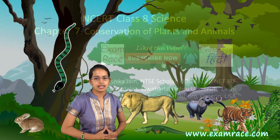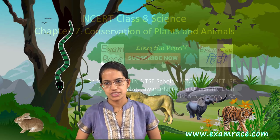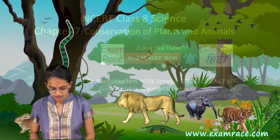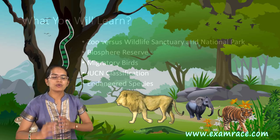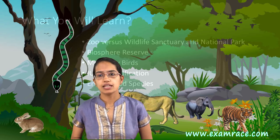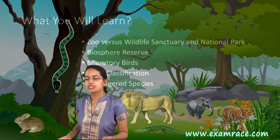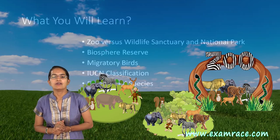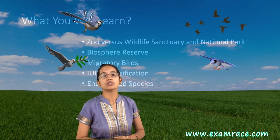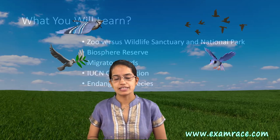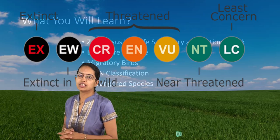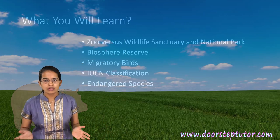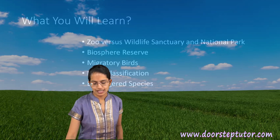Welcome. In this chapter of Class 8 Science we will be talking about conservation of plants and animals. The key topics include the difference between a zoo, wildlife sanctuary, national park, and a biosphere reserve. We will also be talking about migratory species and their migratory patterns, the IUCN classification, the red data book, and endangered species. If you are already covered with these topics you are all set to go, else follow up with the lecture as we proceed.